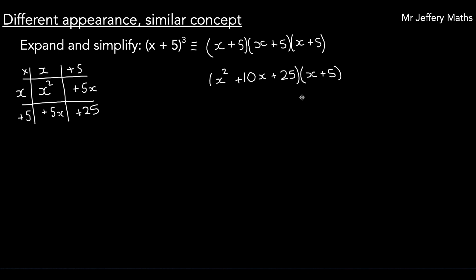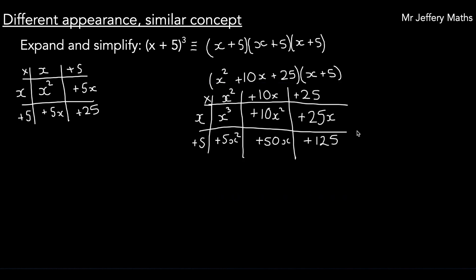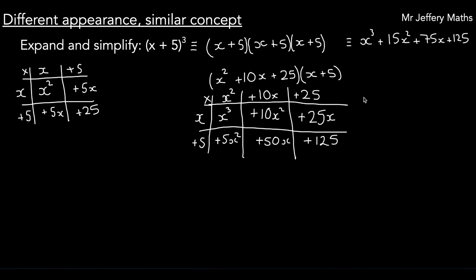We draw out our grid again, get those answers, and then simplify by collecting the like terms. Our final answer is x cubed plus 15x squared plus 75x plus 125.